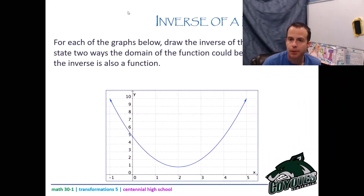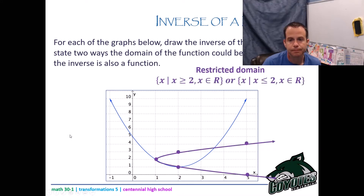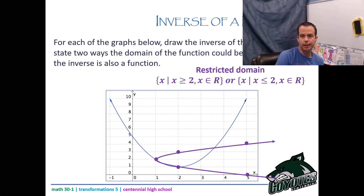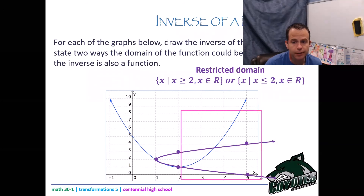For each of the graphs below, draw the inverse of the function and state two ways that the domain could be restricted so that the inverse is also a function. Switch x and y and replot. The vertex of the first one is at x equals 2, not zero, so either x is greater than 2 or x is less than 2 would be acceptable restricted domains.